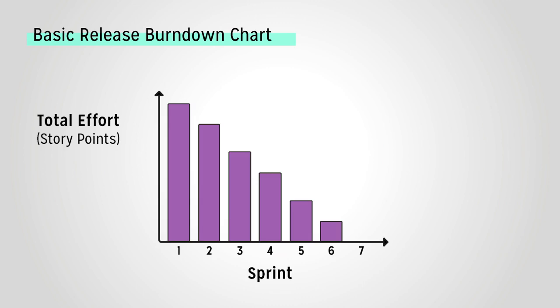Each bar in the graph that corresponds with a sprint represents the total number of story points that are still remaining at the beginning of the sprint. Naturally, at the beginning of Sprint 1, we have all the story points remaining because we have not started completing them yet. This represents your total effort — the combined total of story points for all user stories you intend to complete in the project. As you complete requirements, you remove their story points from the burndown chart.